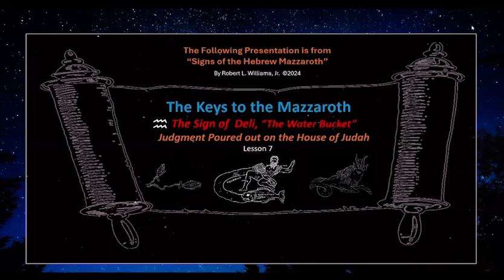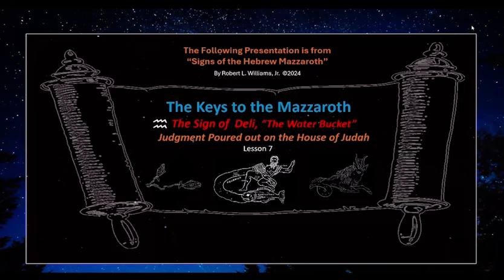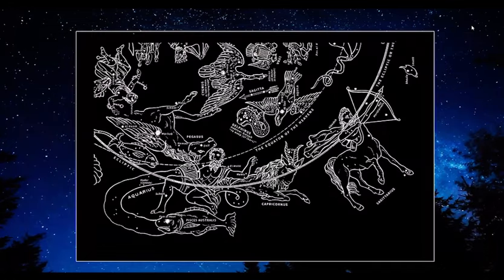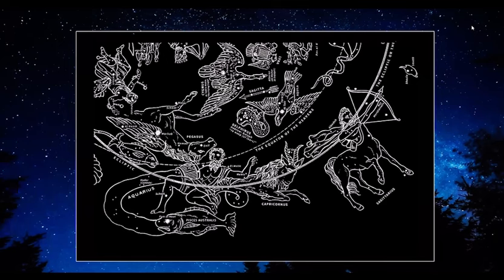In today's lesson, lesson seven of the Keys to the Mazzaroth, we're going to be looking at the sign of Delhi, otherwise known as the sign of Aquarius, which is the water bucket. First of all, let's familiarize ourselves again with the layout of the heavens. Here is Aquarius with the water bucket. You see that it's spilling southward and it's spilling onto Pisces Australis, the southern fish.